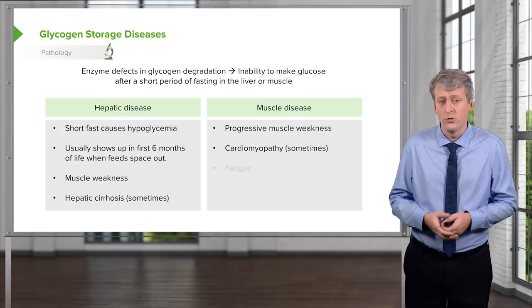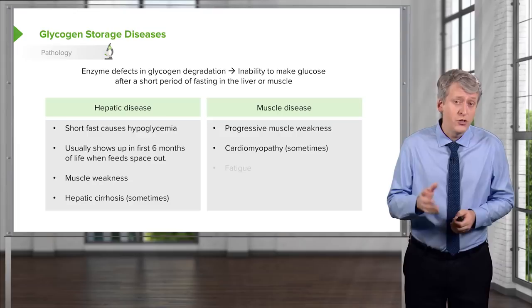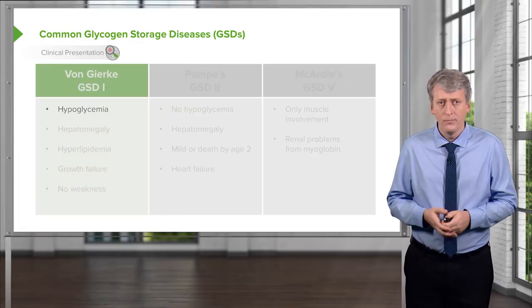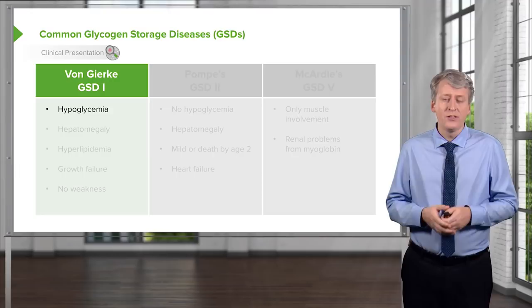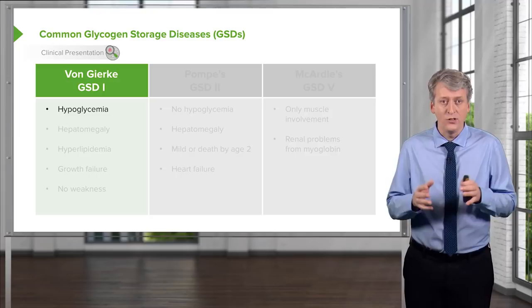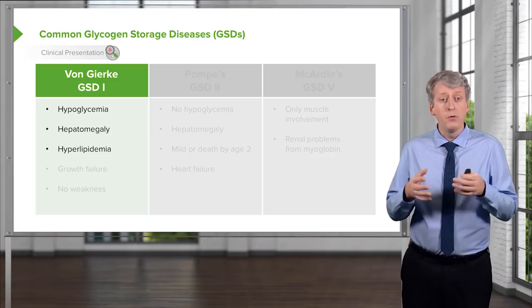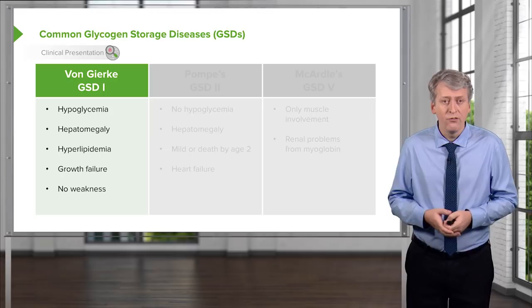Any child with cardiomyopathy is primarily going to present with fatigue. Let's go through three really common glycogen storage diseases. The first one is von Gierke's disease, which I think of as primarily in the liver — this is glycogen storage disease type 1. These patients will present with a profound and challenging hypoglycemia. They will have hepatomegaly from their liver involvement and will develop hyperlipidemia as well. Because of their underlying problem they may have growth failure, but they will not primarily have weakness. Most of their disease is related to the liver.